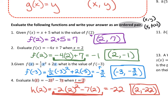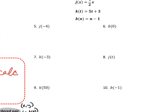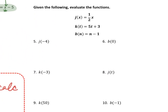The reason we use function notation is especially helpful when we have multiple functions at the same time — this is handy in real-world situations with different functions for different things. For example, we have three functions given together: a function named j with inputs of x, a function named k with inputs of t, and a function named b with inputs of n.